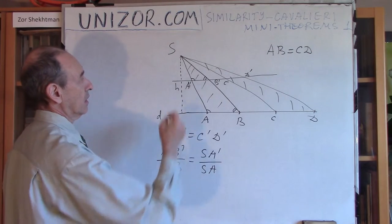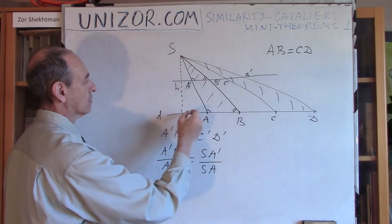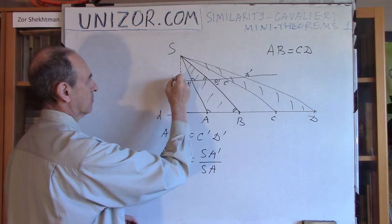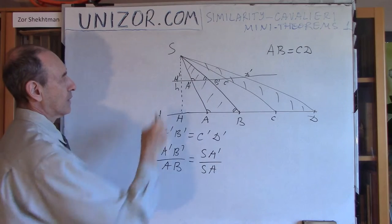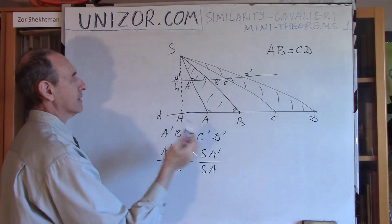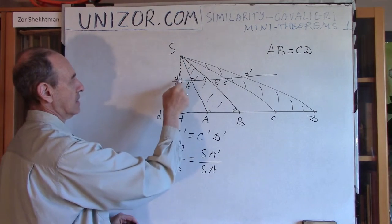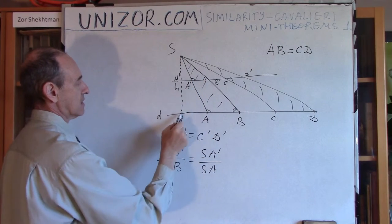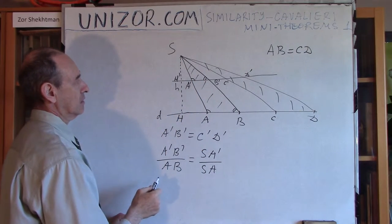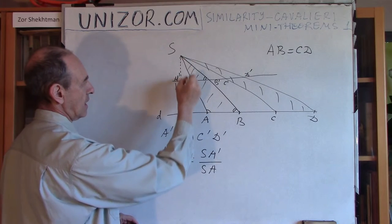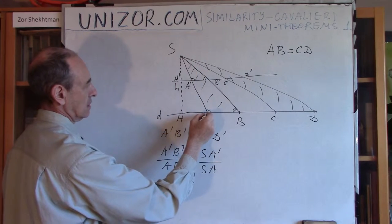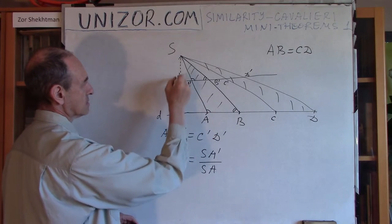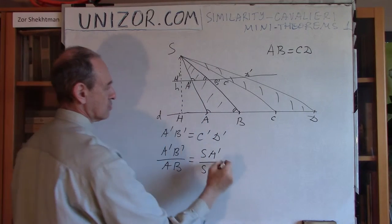Let's call the full height H and the partial height H prime. From the analogous similarity between triangles S H prime A prime and S H A, it follows that S A prime relates to S A as S H prime relates to S H.